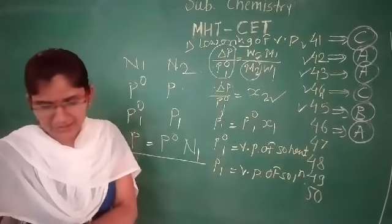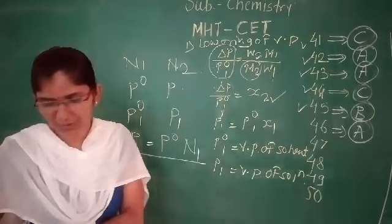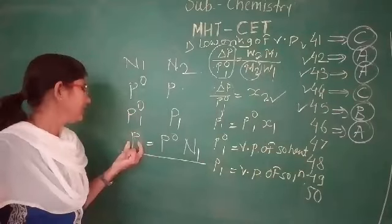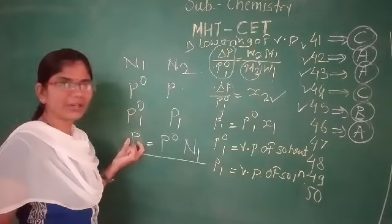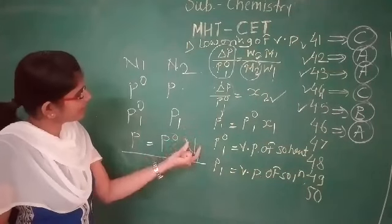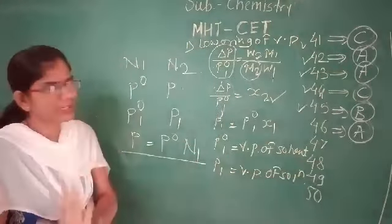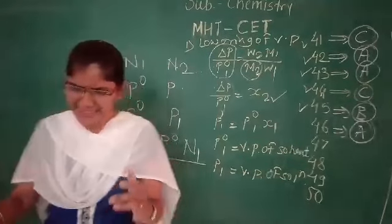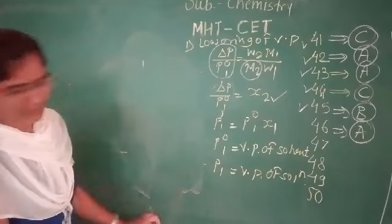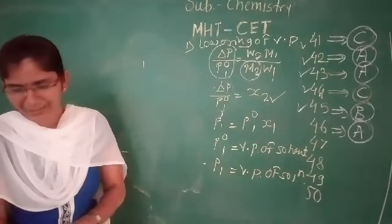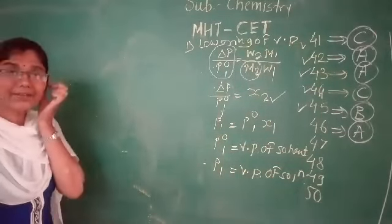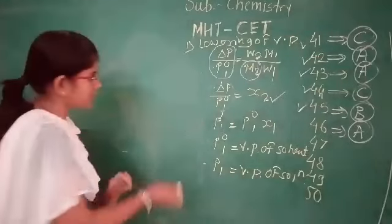Options B, C, and D are incorrect. From Raoult's law, the partial pressure of any component equals the vapor pressure of that pure component multiplied by the mole fraction of that component. Next, question 47 asks which solution has the lowest vapor pressure.